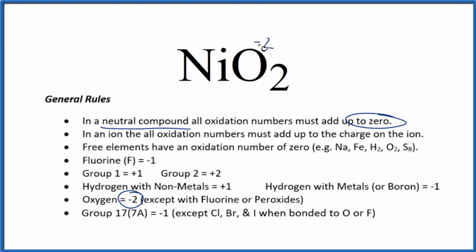Two times minus two gives us minus four here. So for that to add up to zero, the nickel has to be a positive four. And if we check our work, two times minus two is minus four, plus four gives us zero.